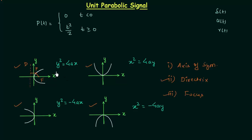In the equation of parabola y² = 4ax, what is 'a'? 'a' is the distance of the focus from the origin. This length is 'a', and since the distance of the focus from the origin is 'a', the distance of the directrix from the origin is also equal to 'a'.